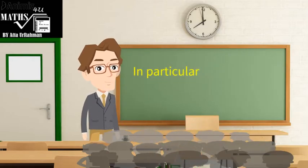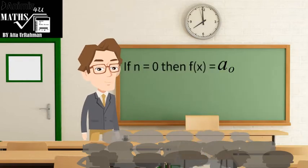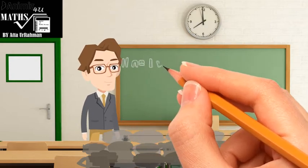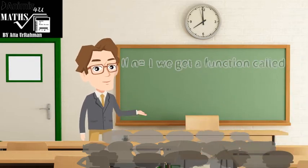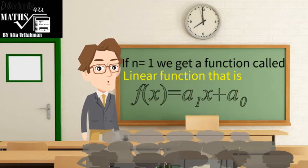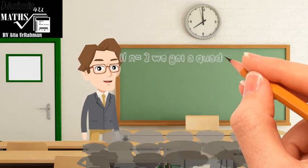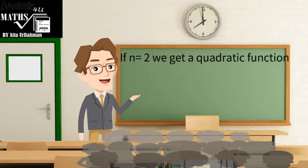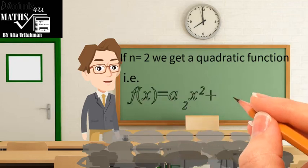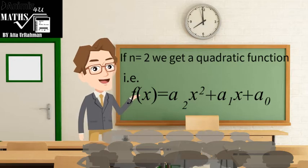In particular, if n is equal to zero, then f(x) = a_0, which is a constant function, which we have discussed in detail in our previous lecture. If n is equal to 1, we get a linear function: f(x) = a_1·x + a_0. If n is equal to 2, we get a quadratic function: f(x) = a_2·x^2 + a_1·x + a_0.